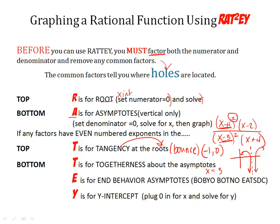E is for end behavior asymptotes. BOBBYO BOTTNO EATSDC. And then lastly, Y is for the y-intercept. Remember, we plug in 0 for x, and we solve it for y. All of this is review. The tangency and togetherness is a little bit new, but you'll get used to that.